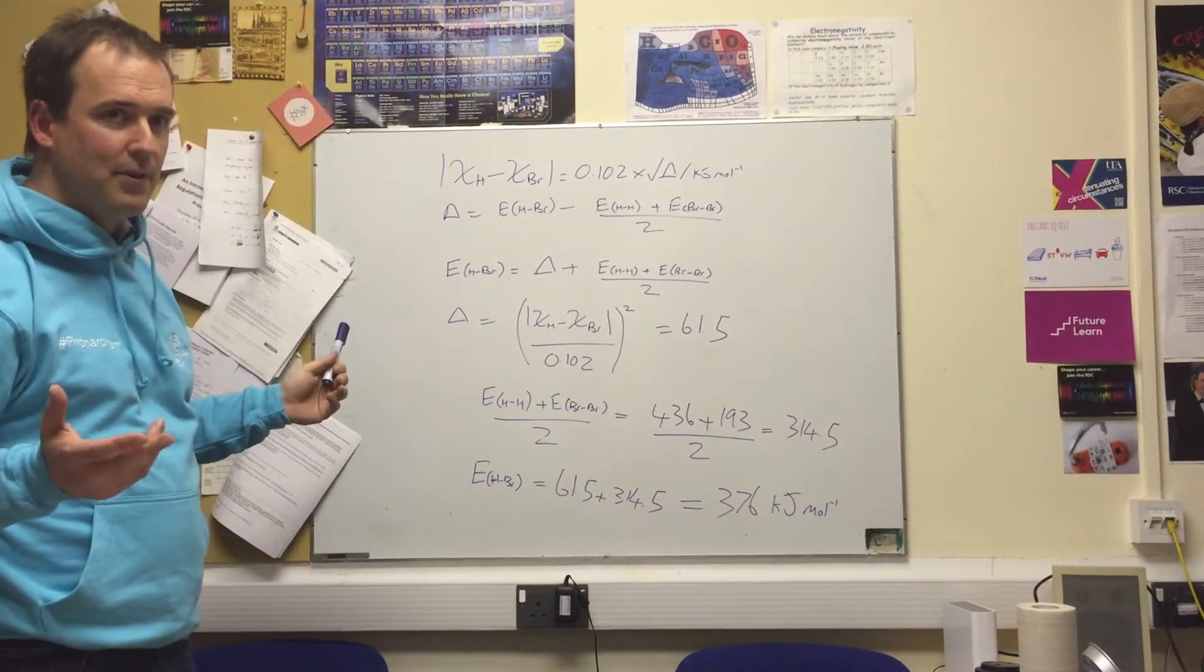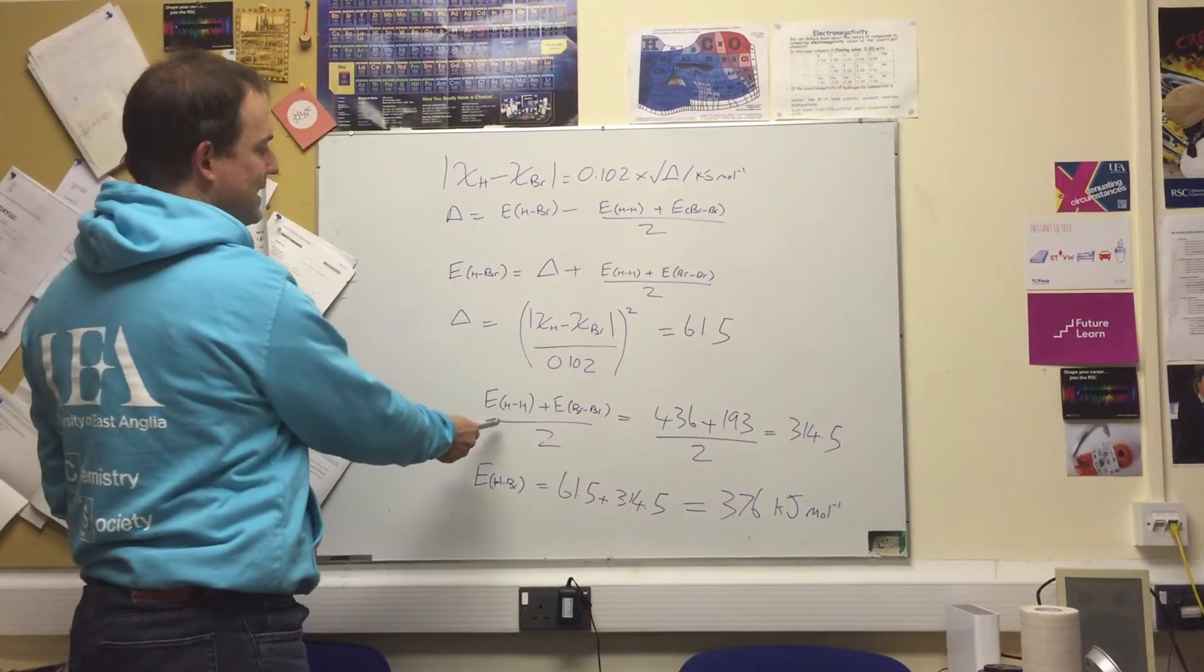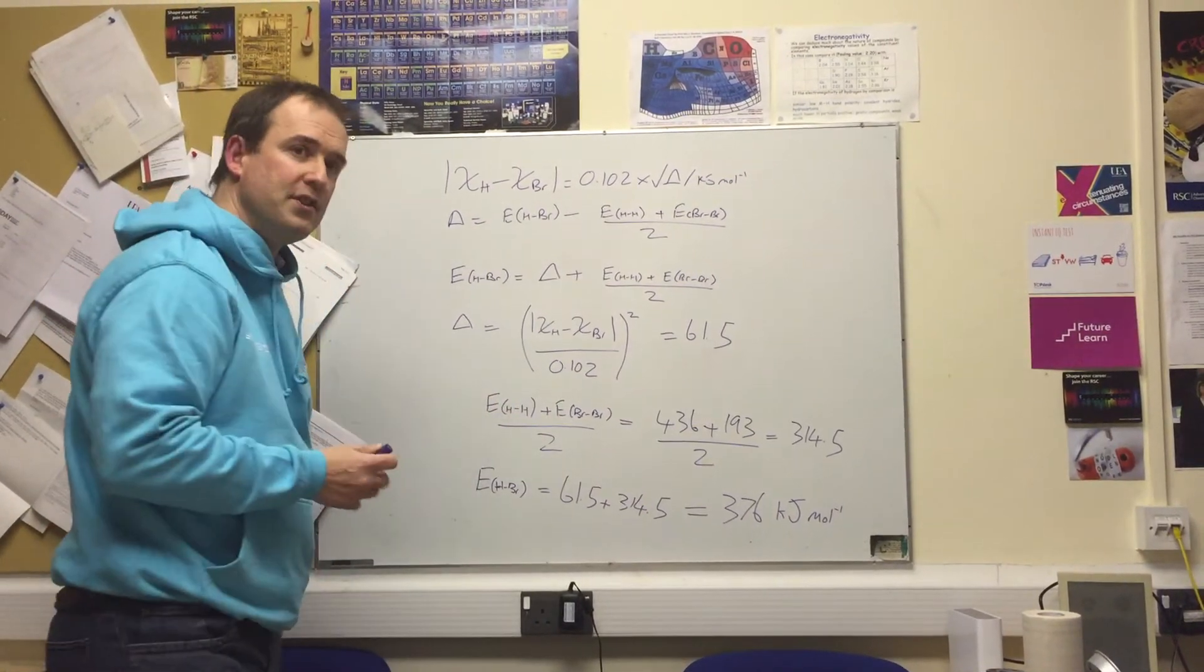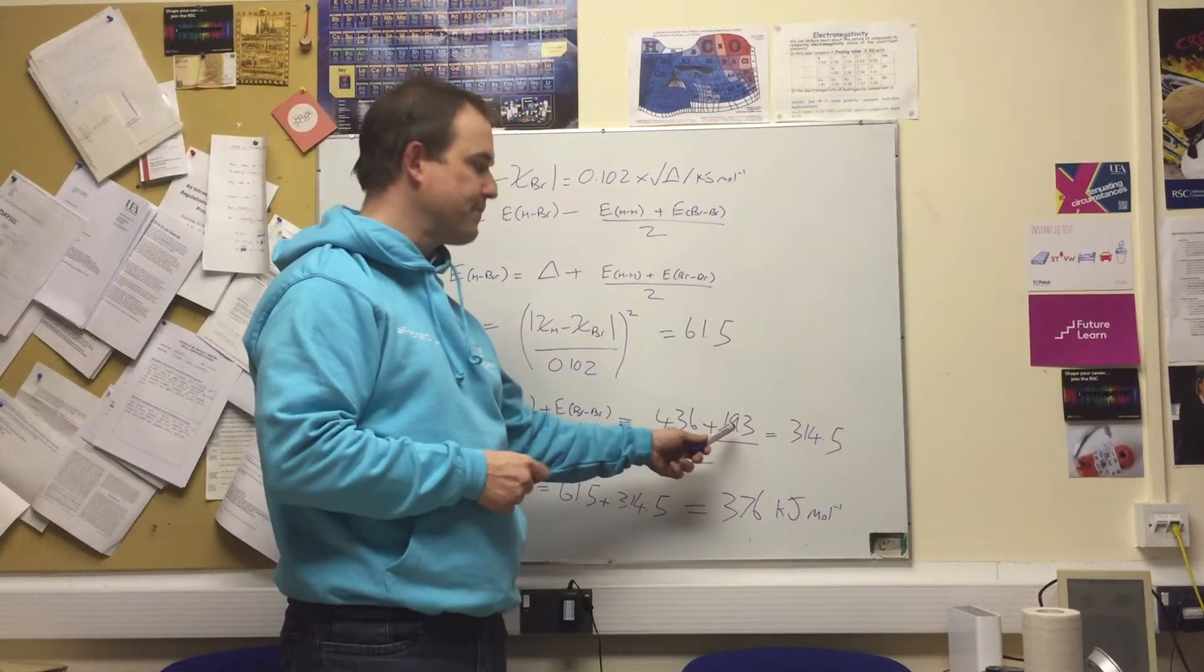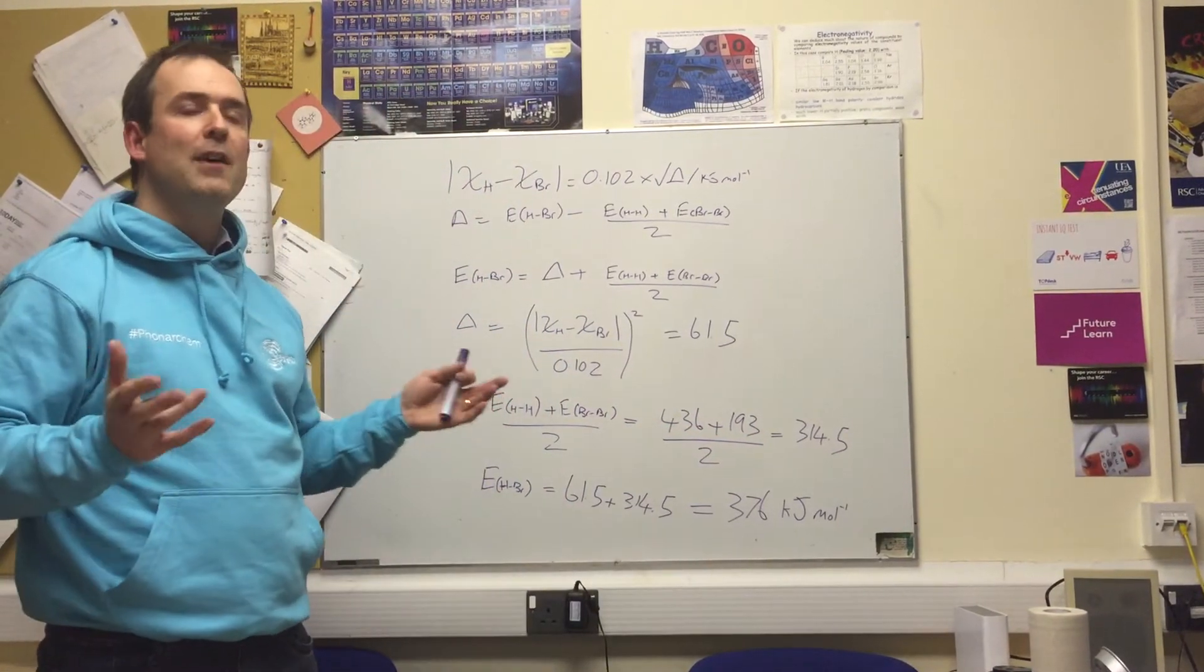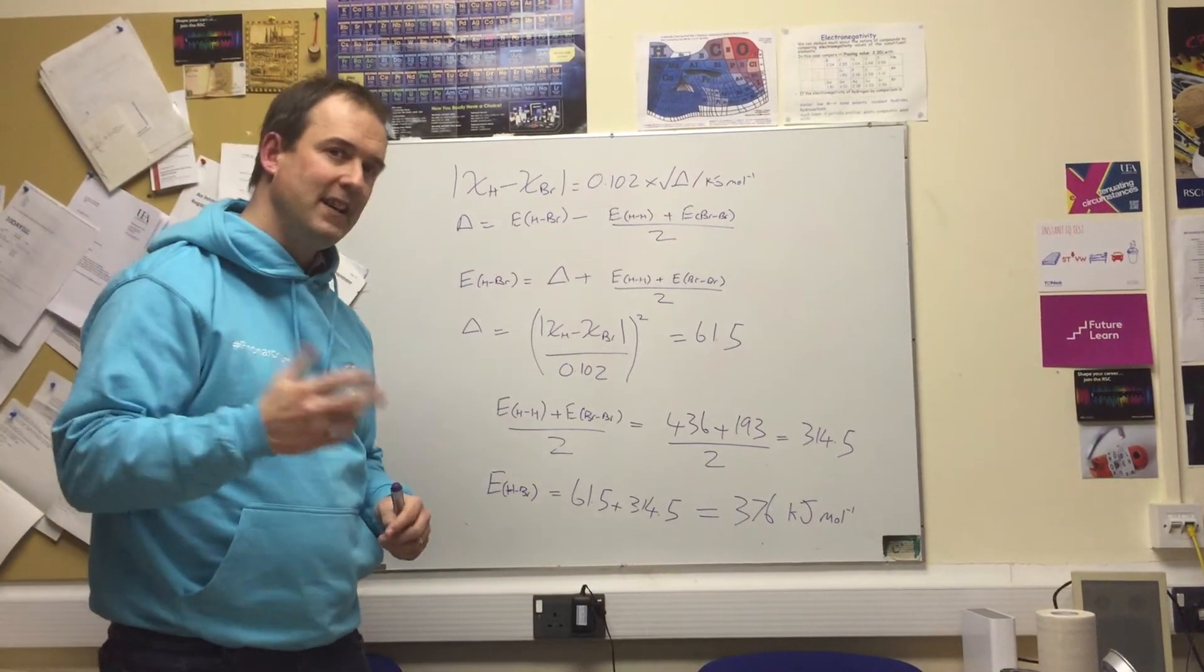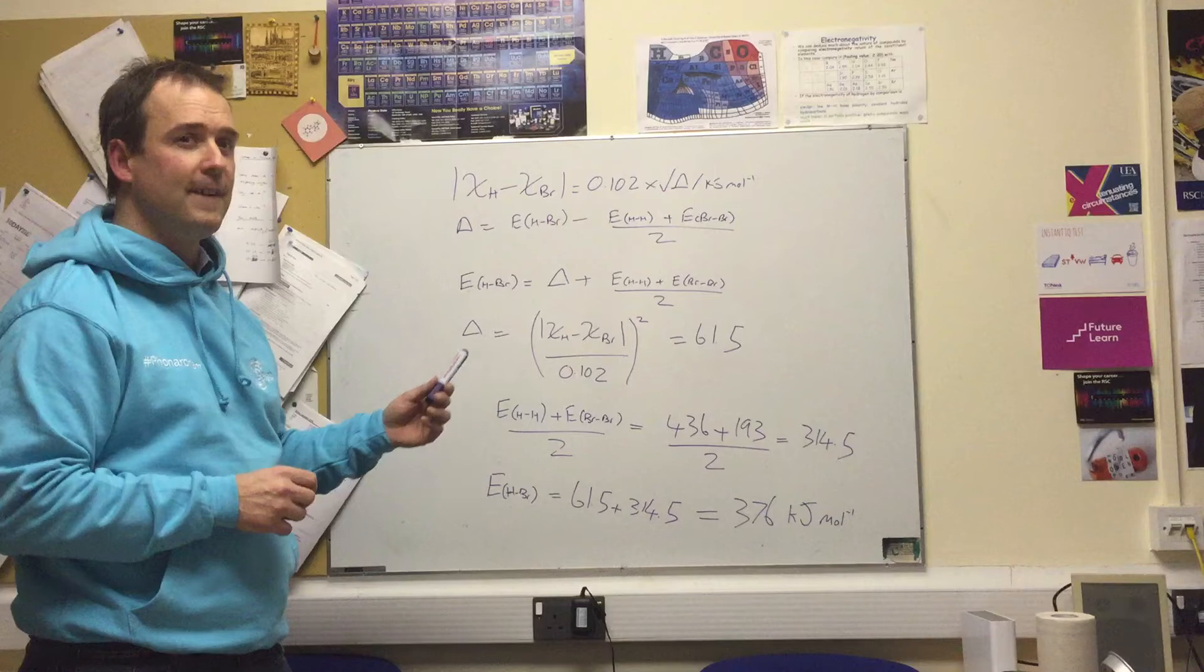The covalent component is very easy for us to calculate as the average of the two covalent bond strengths. That's 436 plus 193 divided by 2, so 314.5 is the bond strength that you would expect if the species was perfectly covalent.